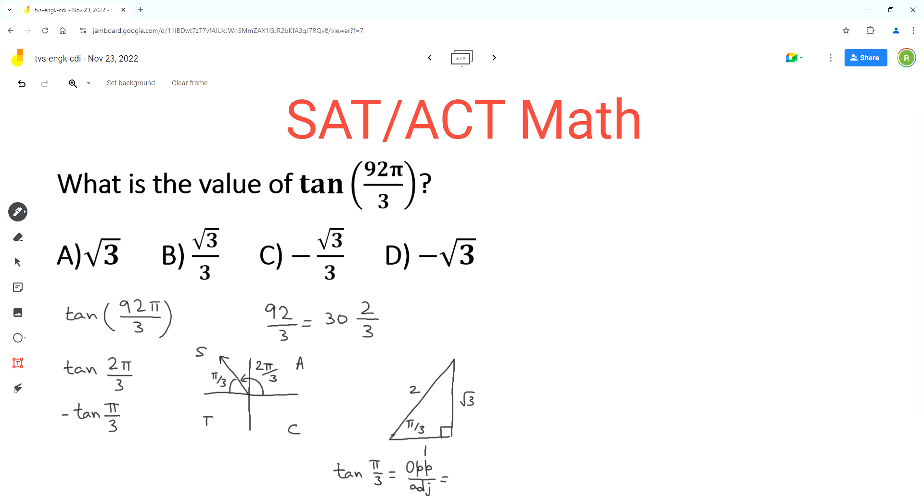The opposite side length is equal to square root of 3. The adjacent side length is 1. So tan of π over 3 is equal to square root of 3.